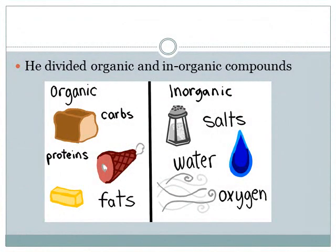He divided organic and inorganic compounds. Organic compounds are those which essentially contain carbon as an element. Inorganic compounds include substances like water and oxygen.